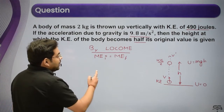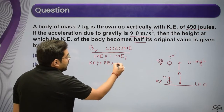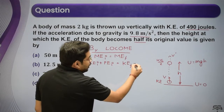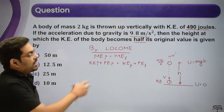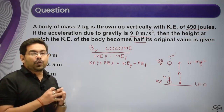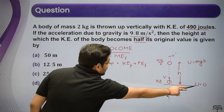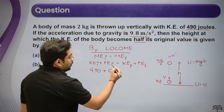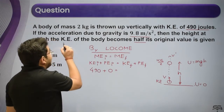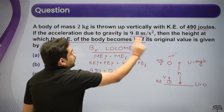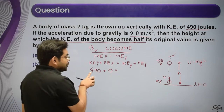Mechanical energy means kinetic energy initial plus potential energy initial equals kinetic energy final plus potential energy final. Initially, kinetic energy is 490 joules and potential energy is 0. The required condition is that kinetic energy becomes half its original value, so final kinetic energy is 490/2 = 245 joules.